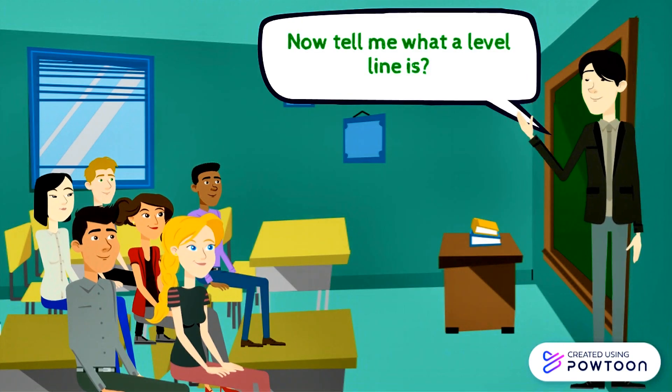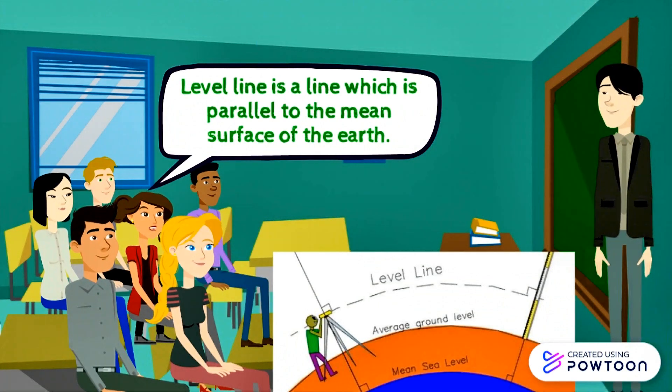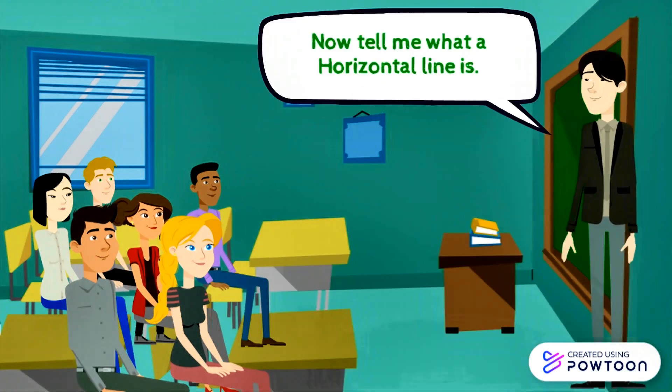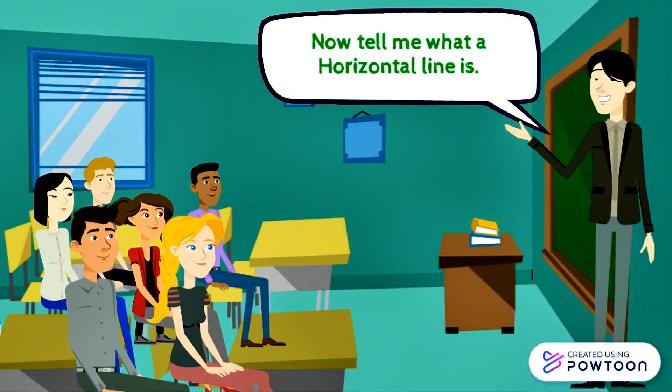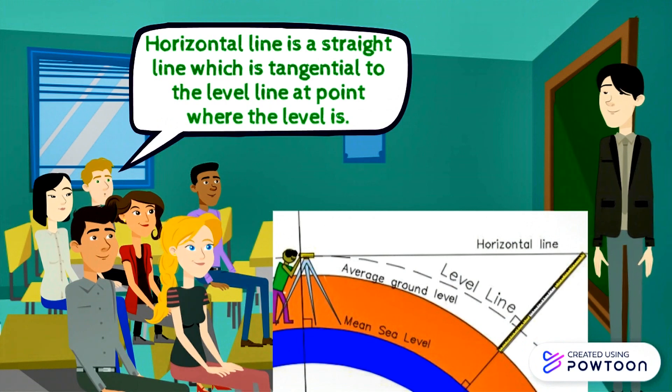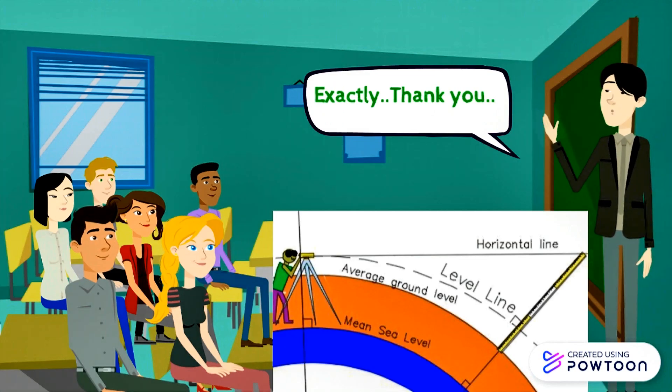Now tell me what a level line is. A level line is a line which is parallel to the main surface of the earth. Very good. Now tell me what a horizontal line is. Horizontal line is a straight line which is tangential to the level line at the point where the level is. Exactly thank you.